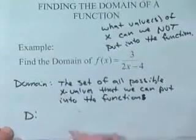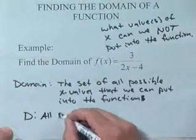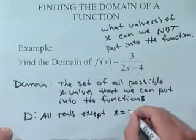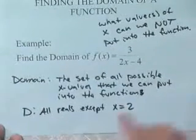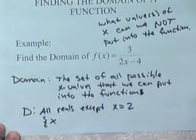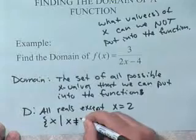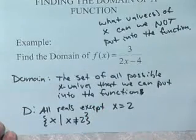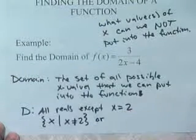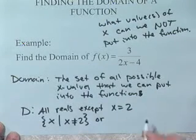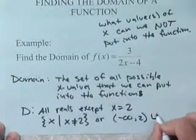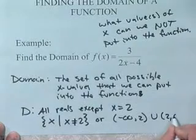I'll write that down. The domain of this function, all reals except x equals 2. And that's not really a very good notation. We could say the domain is the set of all x such that x does not equal 2. That's a good notation. That's called set notation. Or I like interval notation. The set of all numbers except for 2 is negative infinity to 2, union with 2 to infinity.